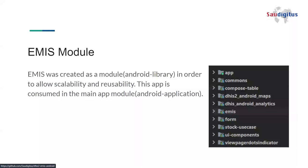EMIS was created as a module. The DHIS2 capture app already has different modules — for instance, stock use cases, comments, form — they are all modules and EMIS works as a module. It's not a standalone app, but it works together with the others. One of the benefits of creating EMIS as a module was about the scalability and reusability of the app.